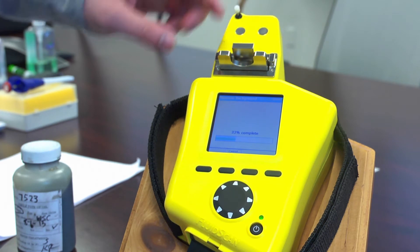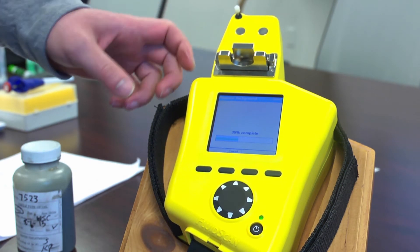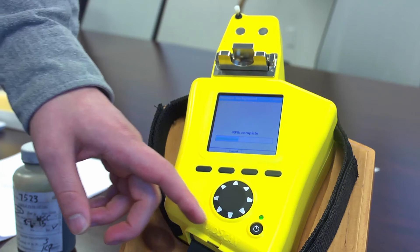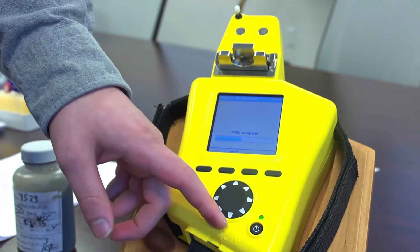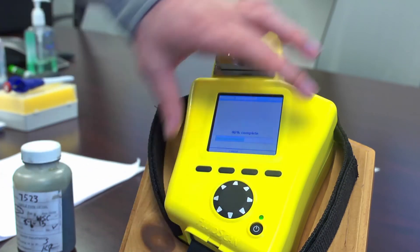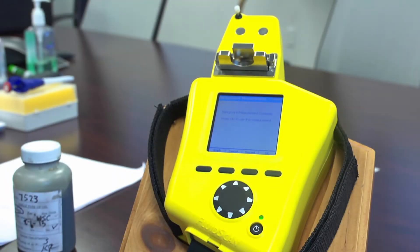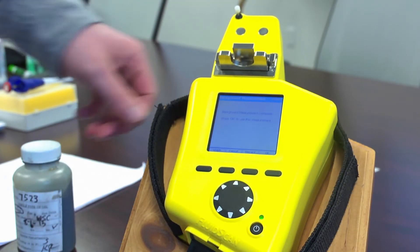Once the IR laser goes through the flip top cell, it then goes on to the wedge portion of the device which breaks up into the spectra. Once background measurement is complete we hit OK.